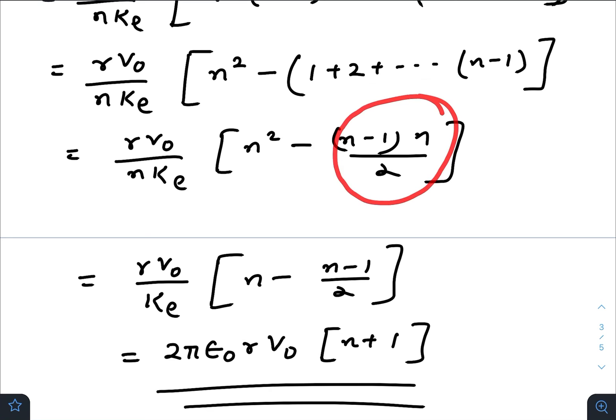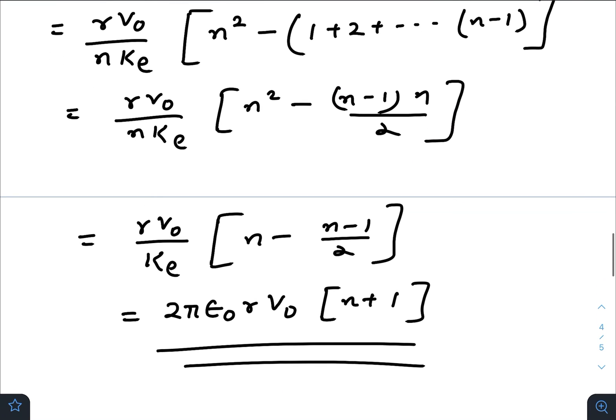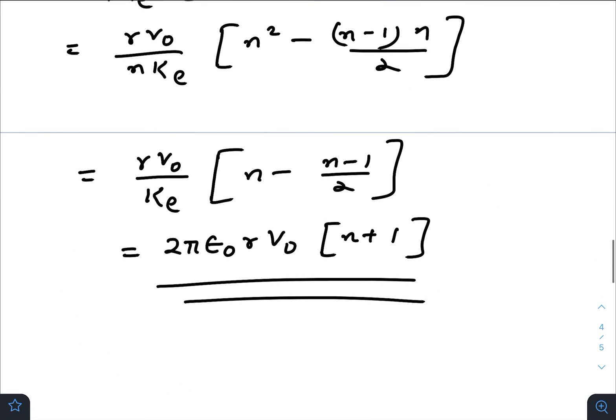This leads to the final answer: (rV₀/ke)[n - (n-1)/2] = 2πε₀rV₀[n+1]. So I hope you all have found this video helpful and informative. If you are new to this channel, please do subscribe.